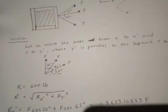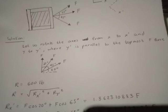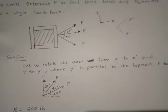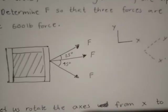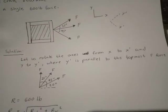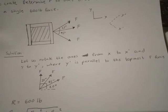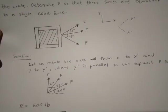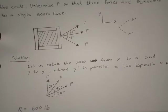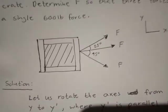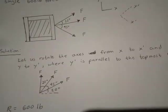This is how the solution works. Let us rotate the axis from X to X bar and Y to Y bar. This is the traditional X and Y axis here. Instead of using that, we will use this, where Y bar is parallel to the topmost F force. I may correct myself. This Y bar should be realigned with the topmost force F, not the lowest.